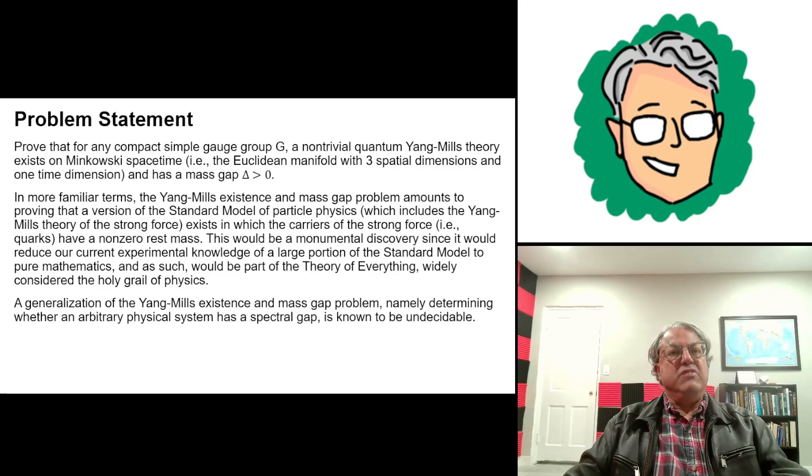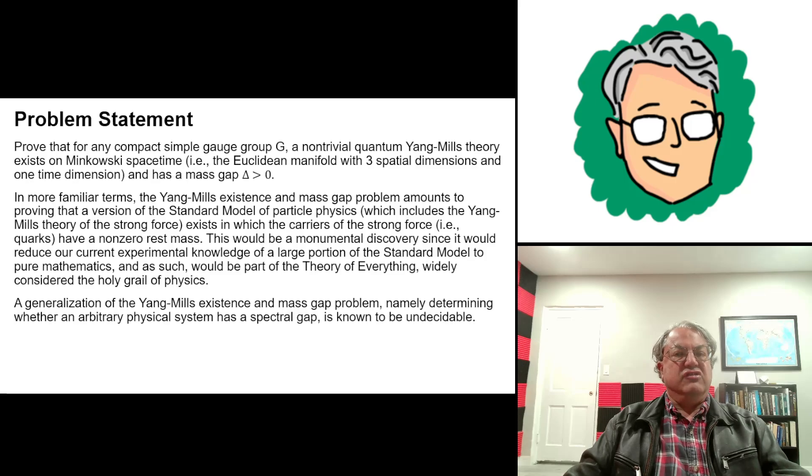a non-trivial quantum Yang-Mills theory exists in Minkowski spacetime. That's a manifold, Euclidean manifold, with three spatial dimensions and one time dimension. I think it's topologically equivalent to R4. People sometimes write this as R to the fourth, which is really just the real numbers and four dimensions. You can think of three space dimensions and one time dimension.